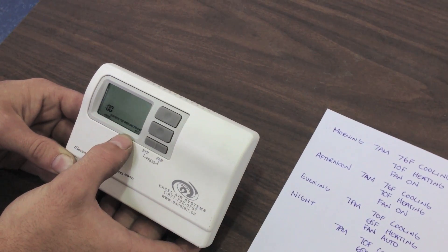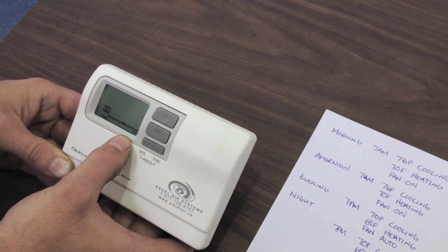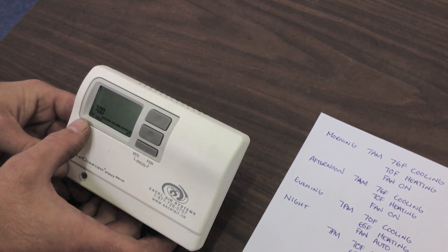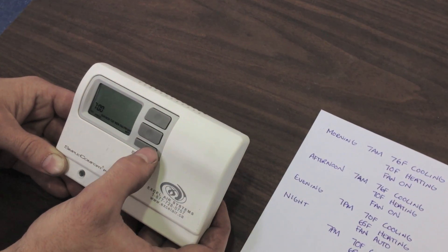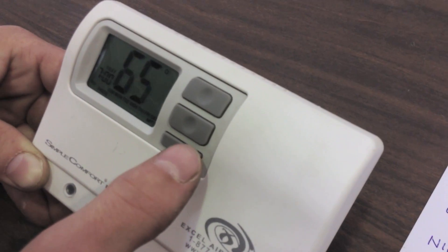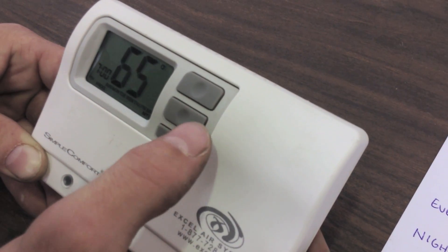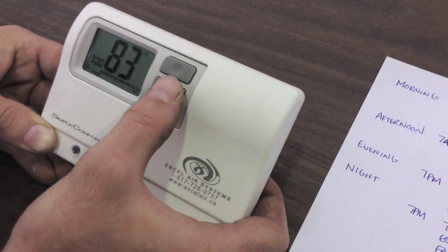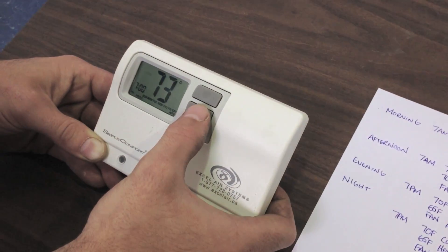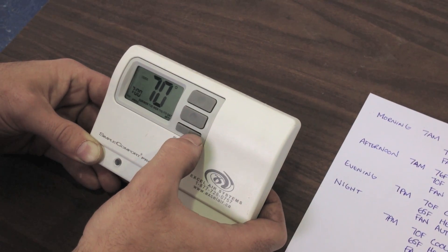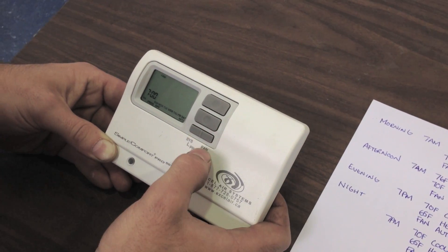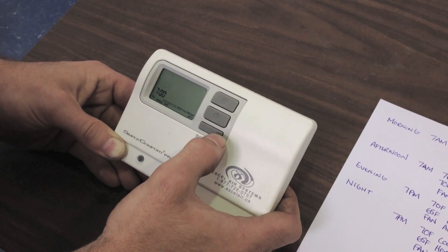And we're on our last schedule, our night schedule, which we're going to duplicate the evening by going down to 7 p.m. Make sure p.m. is displayed. Push fan. Pass our minutes fan one more time. We're going to go to our heat set point of 65. We push fan again, our cool, which we want to go to 70 degrees. We push fan again when we're happy. And our fan we want in the off position. And we push fan one more time.